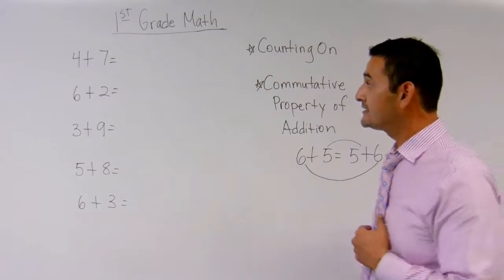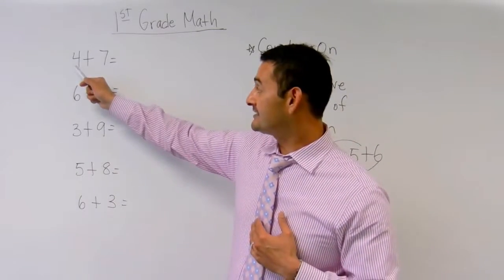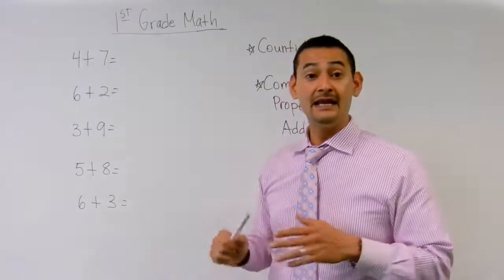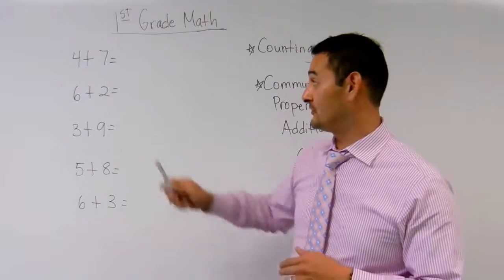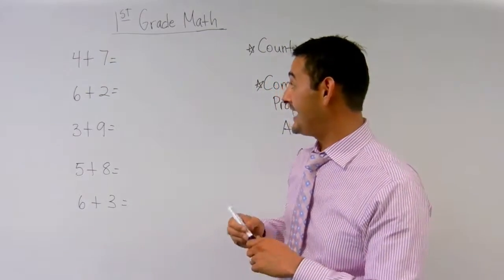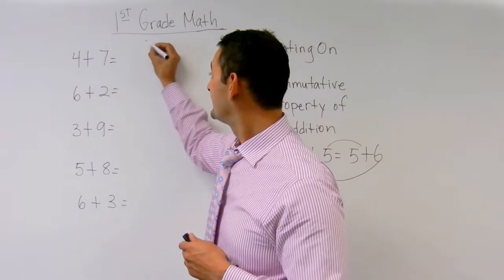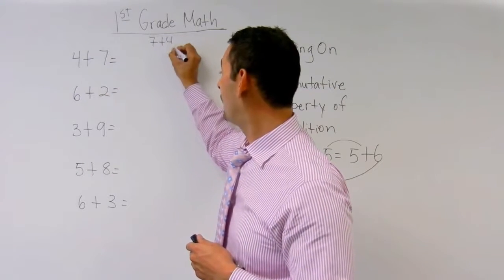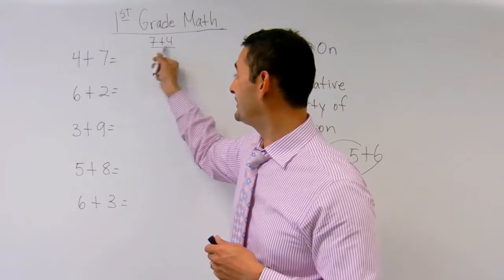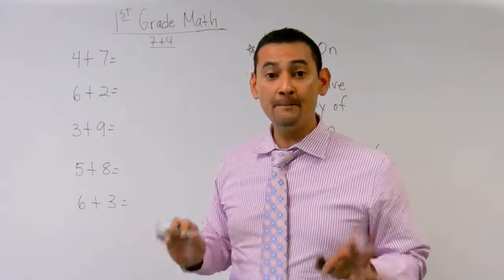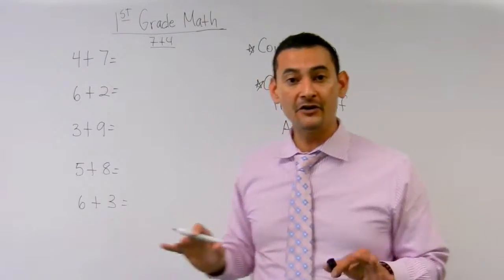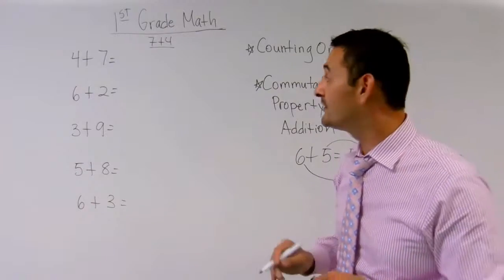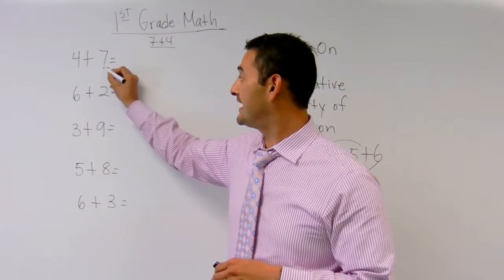So let's take a look at this first example here. This says 4 plus 7. Here's the strategy that I want you to use. 4 plus 7 is the same as 7 plus 4. It means the same thing. I always want you to pick the larger number, the bigger number, the greater number. Which is the greater number in this case? It's the 7.